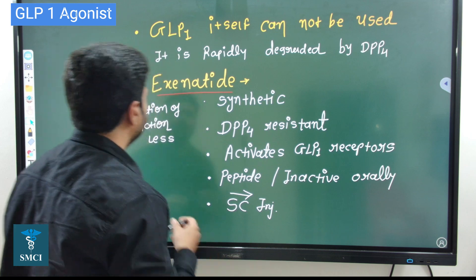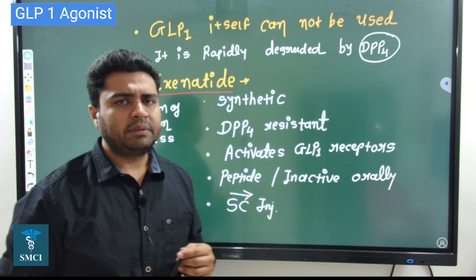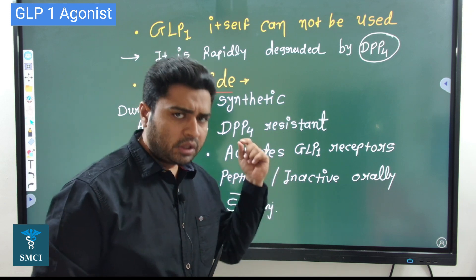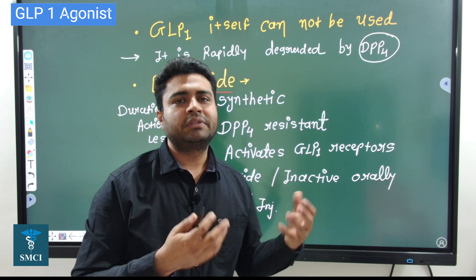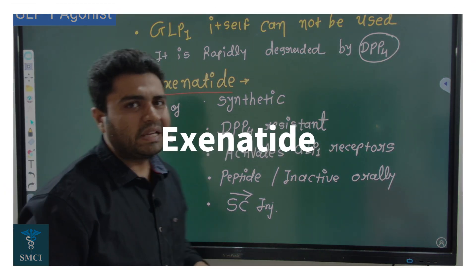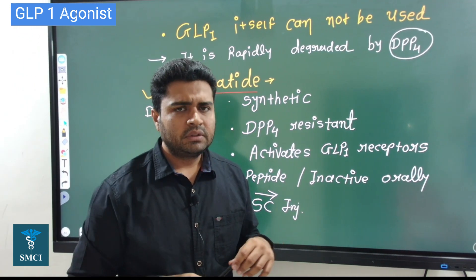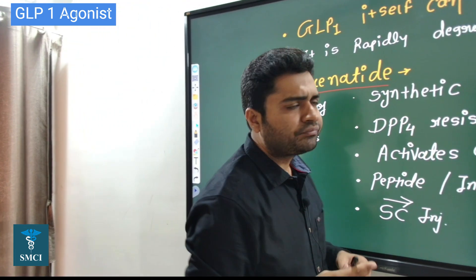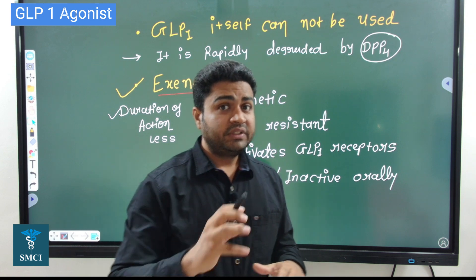Why not just prepare GLP-1 analog in the laboratory and give to the patient? It's not possible because GLP is a peptide — whenever things are protein and we take them orally, they are destroyed in our GI tract. GLP-1 analogs are actually degraded by the DPP-4 enzyme. We have discussed DPP-4 inhibitors like sitagliptin, teneligliptin, and vildagliptin. So we need to develop synthetic molecules resistant to DPP-4. The first molecule developed was exenatide.